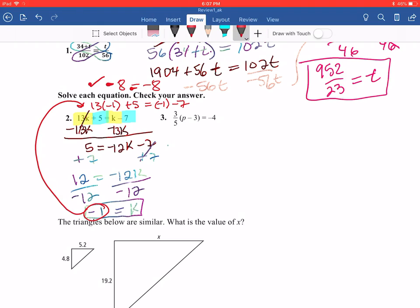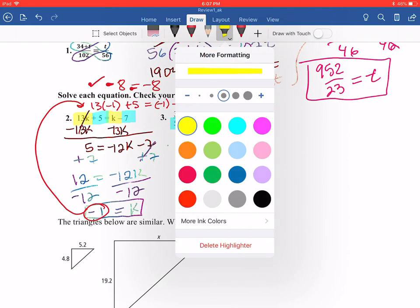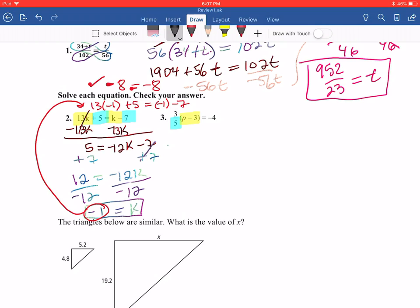All right. Number three, we're going to get rid of our fraction. In order to get rid of our fraction, we're going to look at the number that's in our denominator. These numbers here are grouped, the p minus 3. So I'm not going to do anything with that. In order to clear my fraction, I'm going to multiply both sides of my equation by the number that's in the denominator or a common multiple. In this case, everything else, all the other terms are over one—5 times 1 is 5. So I'm going to multiply everything by 5.